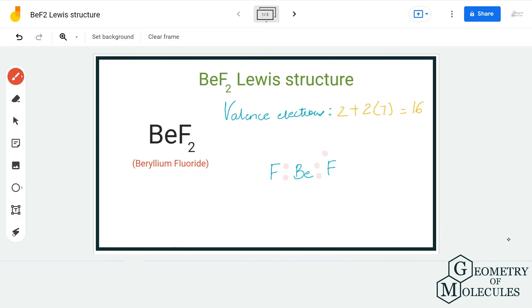We'll place six valence electrons around each fluorine atom. Doing that, we use up all our valence electrons, resulting in a single bond between beryllium and each fluorine.